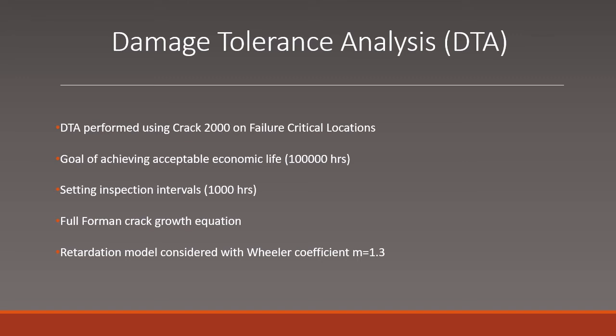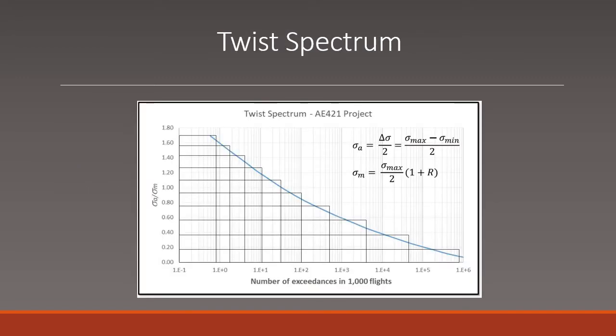Once the failure critical locations were determined, the next step was to analyze these locations with a crack growth simulation software. We need to ensure that if a crack was to grow at any of the FCLs, it would not reach a critical size before the economic life of 100,000 flight hours that was imposed as a requirement. Additionally, we need to ensure that the NDI inspection intervals were not less than 1,000 flight hours. The software used was Crack 2000. The Forman crack growth rate equation was used, and retardation effects were considered in the analysis with a Wheeler coefficient of 1.3. Also, an initial crack size of 0.005 inches was used. The loading spectrum chosen was the TWIST spectrum. The TWIST spectrum was specifically for wing root analysis. In the analysis, an average flight time of 3 hours was assumed.